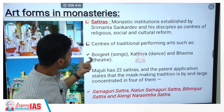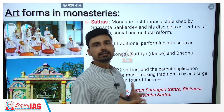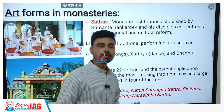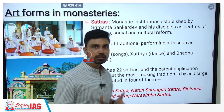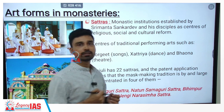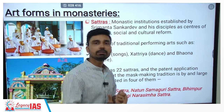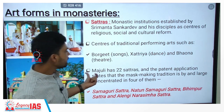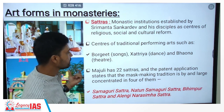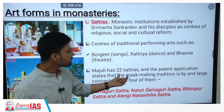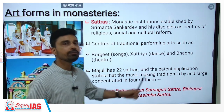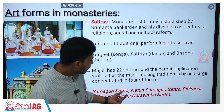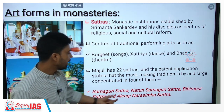These art forms were used as reform methods because in the 15th–16th century, modern literacy as we know it did not exist. To convey messages to a large section of society, easy and accessible methods were needed, and performing arts were best suited for that purpose. Majuli has overall 22 Satras, and the patent application states that the mask-making tradition is concentrated in four of them: Samaguri Satra, Natun Samaguri Satra, Behimpur Satra, and Alangi Narasimha Satra.